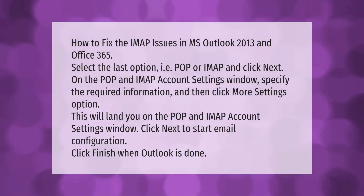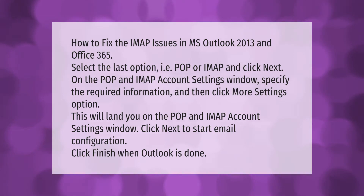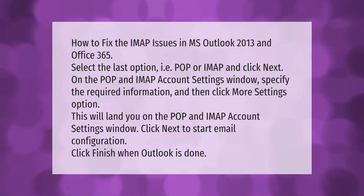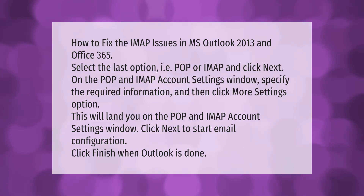How to fix IMAP issues in MS Outlook 2013 and Office 365: select the last option, i.e., POP or IMAP, and click Next. On the POP and IMAP account settings window, specify the required information and then click the More Settings option. This will open the POP and IMAP account settings window. Click Next to start email configuration, then click Finish when Outlook is done.